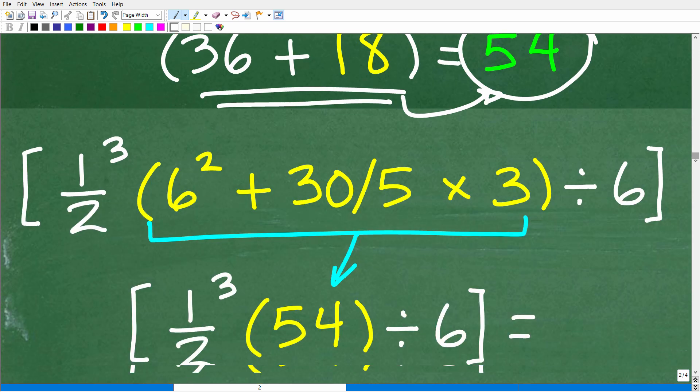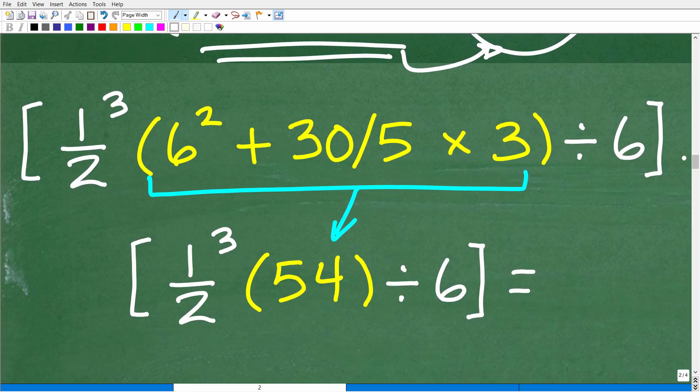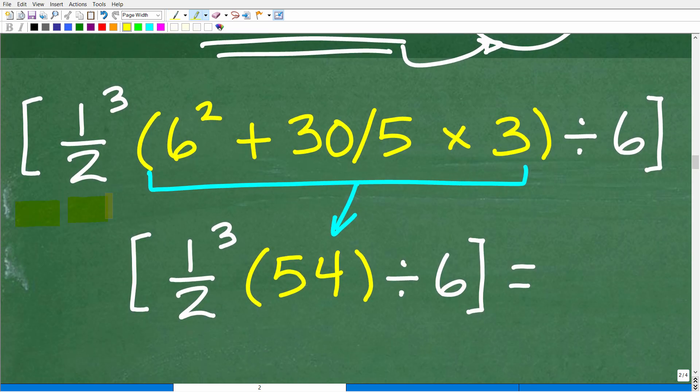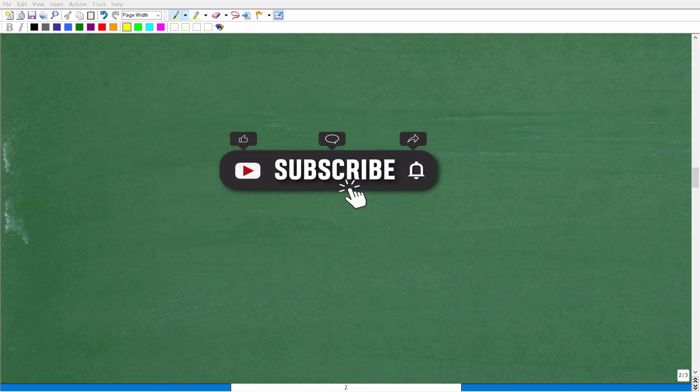Okay. So, that means that this part of the problem, brackets 1 half cubed times parentheses 6 squared plus 30 divided by 5 times 3, and parentheses divided by 6 and brackets. Now, of course, we just did all this work right here. And that's equal to 54. So, our problem now boils down to 1 half cubed times 54 divided by 6. Now, before we continue on, make sure to hit that subscribe button.